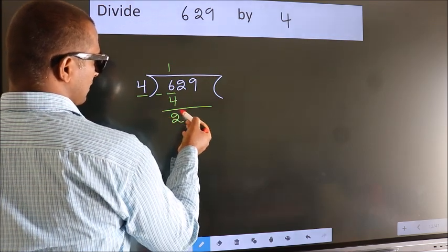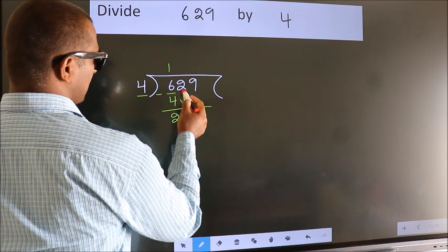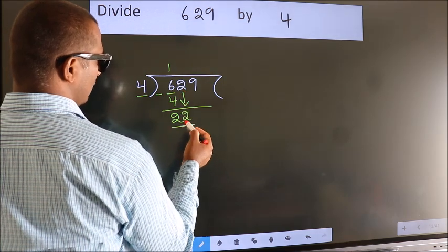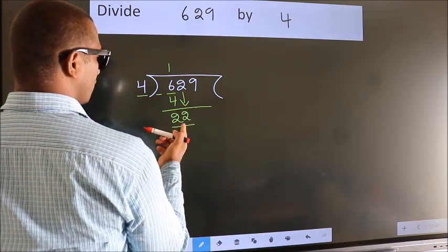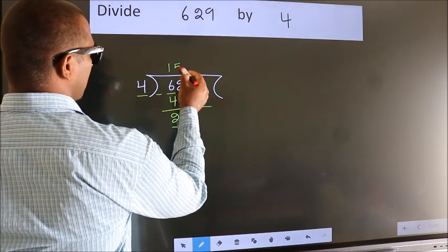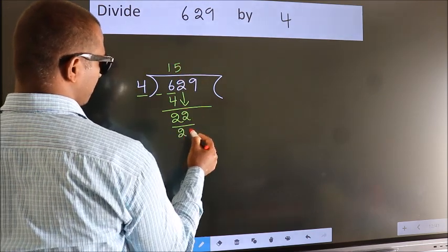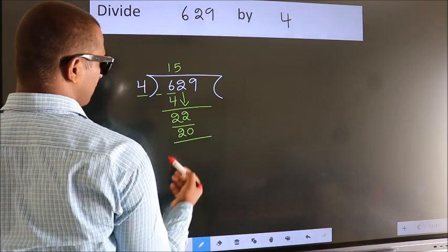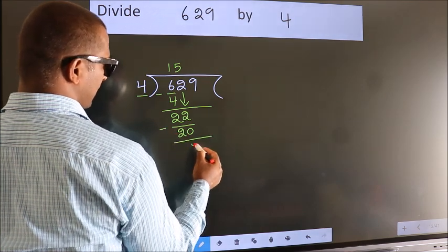After this, bring down the beside number. So 2 down. So 22. A number close to 22 in 4 table is 4 fives, 20. Now we subtract. We get 2.